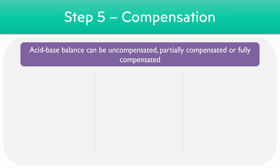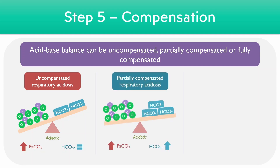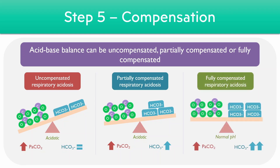When reporting the final result of an ABG, it's important to give the level of compensation which is present. Using the case of a respiratory acidosis, this may be uncompensated — where the carbon dioxide levels far outweigh the bicarbonate ions — partially compensated, where the bicarbonate ions are trying to increase to balance the CO2 but conditions are still acidotic, or fully compensated, where the bicarbonate levels are enough to balance the CO2 and lead to a normal pH overall.